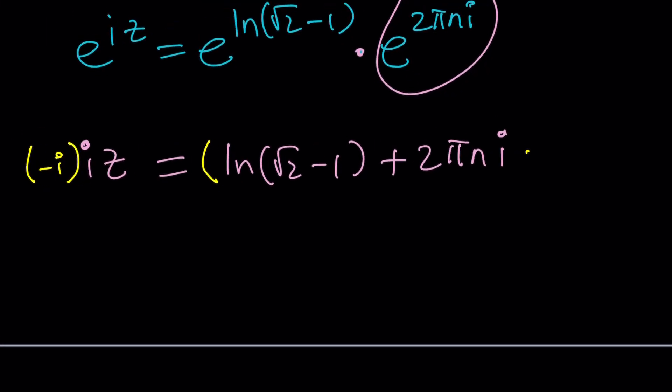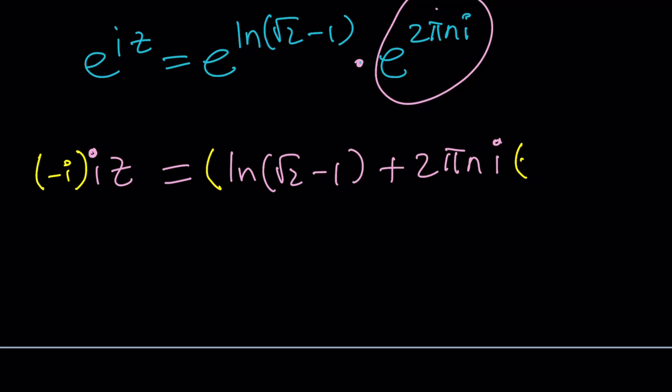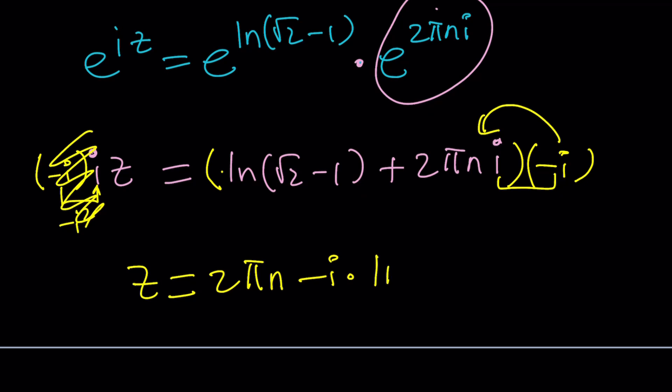And now we can do the natural log thing. And if you do, you're going to get iz equals ln root 2 minus 1 plus, because when you multiply, you add the exponents, 2 pi n i. This is the period, so we need to add it to include all branches and solutions. So we're going to be solving for z. The right answer is multiply by negative i, because it's cooler. Negative i times i is negative i squared, and that's equal to 1.